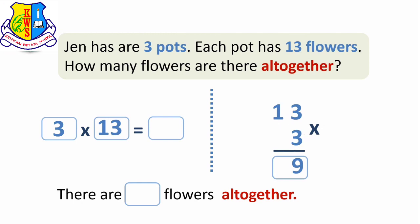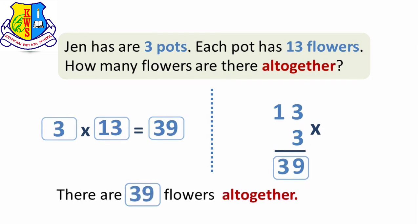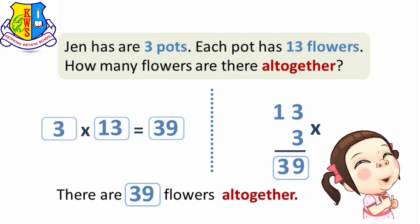1 times 3 makes 3. The answer is 39. There are 39 flowers all together.